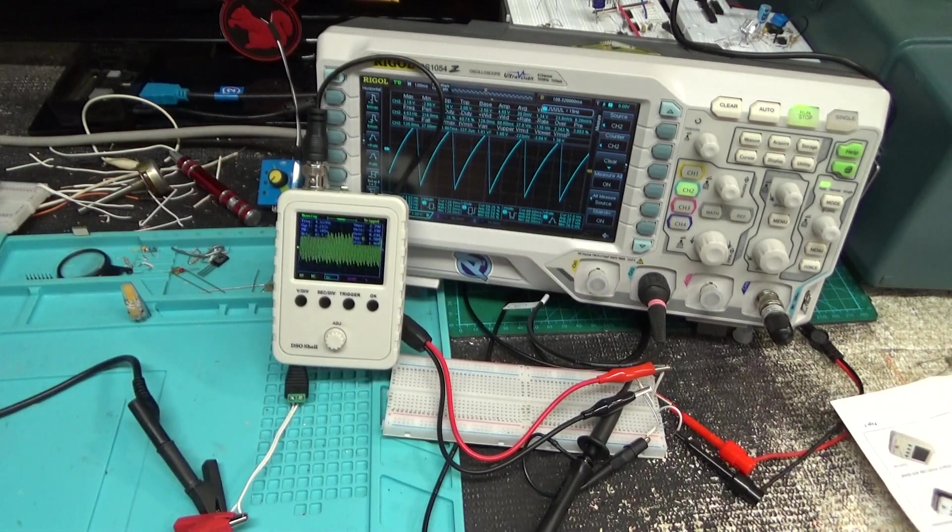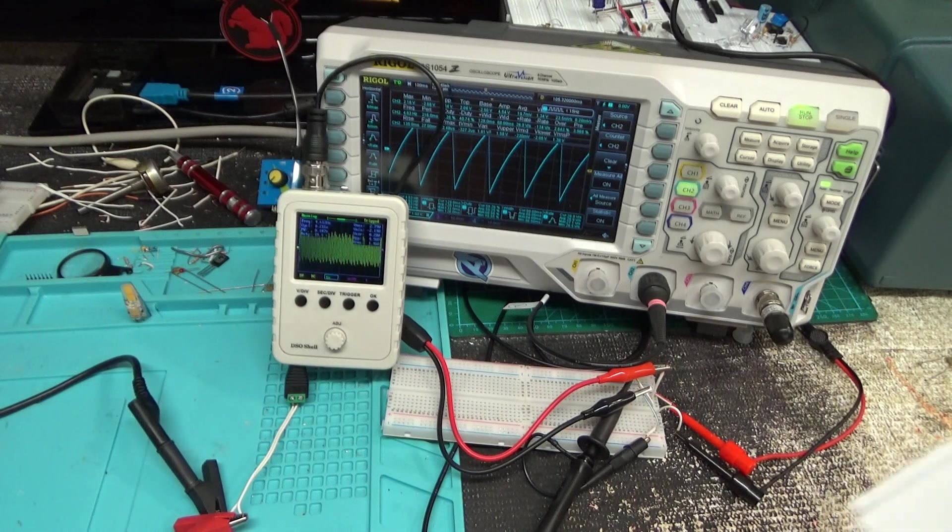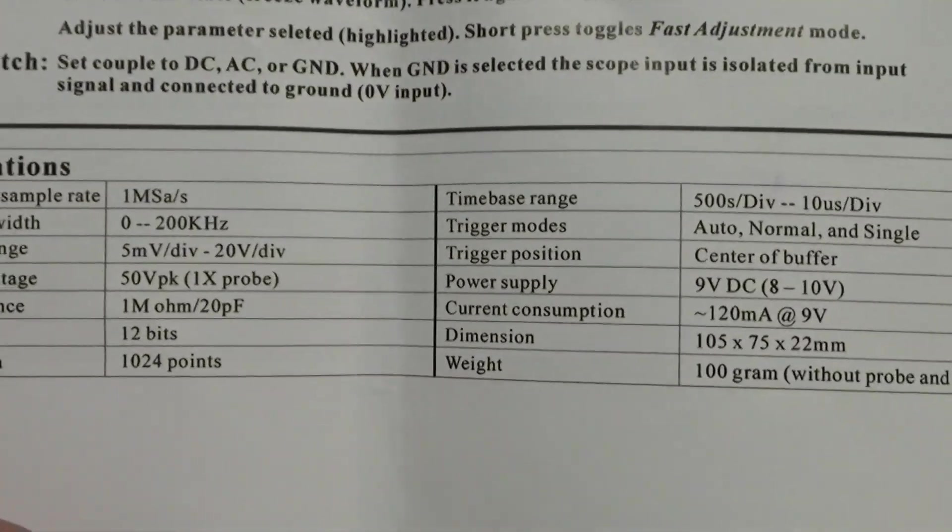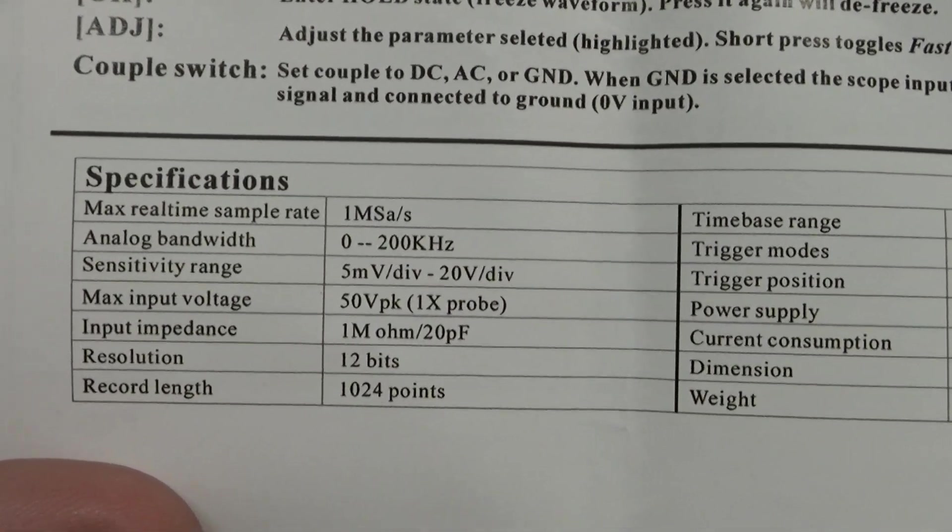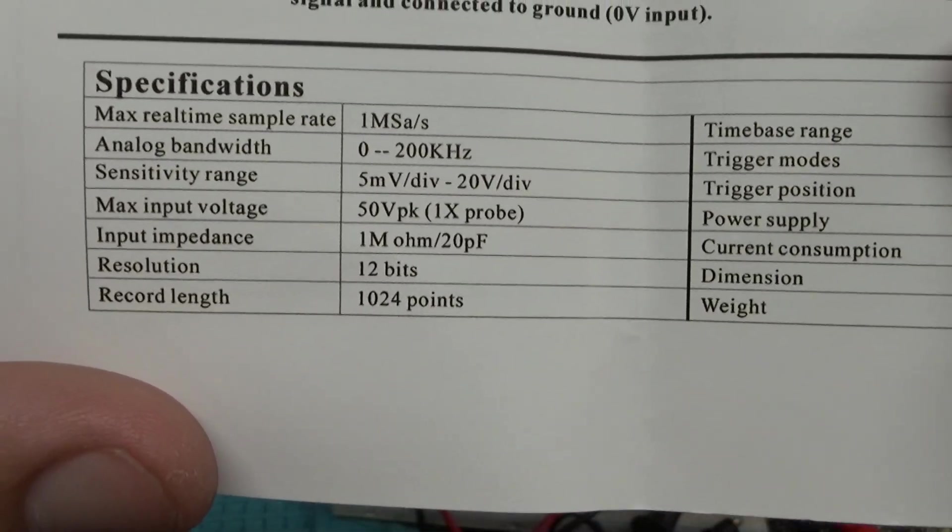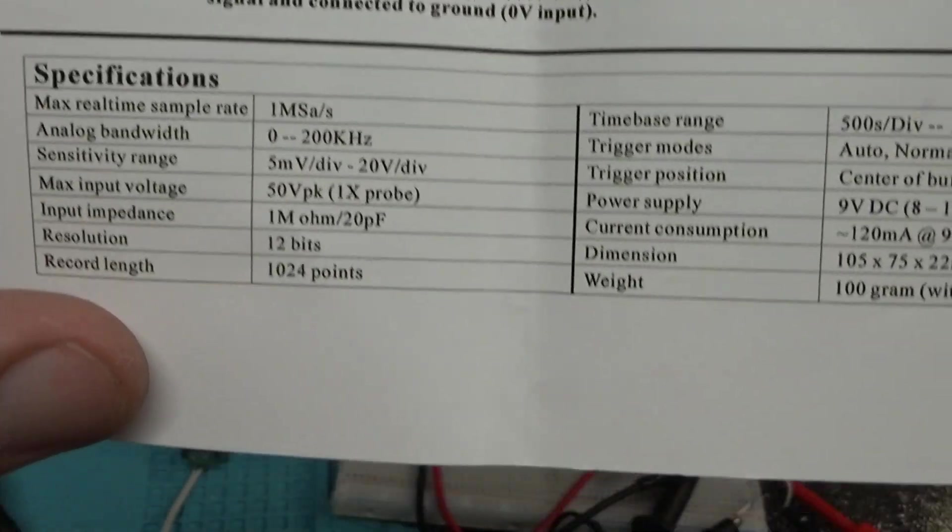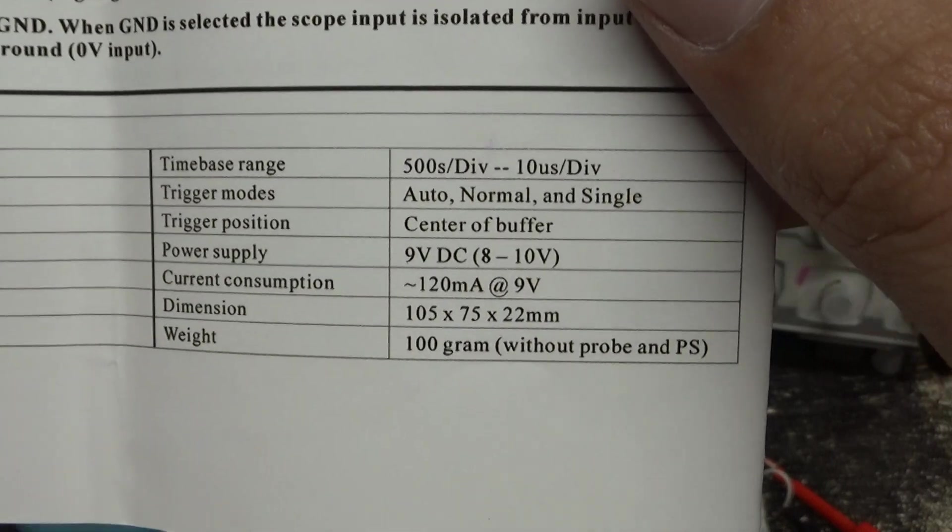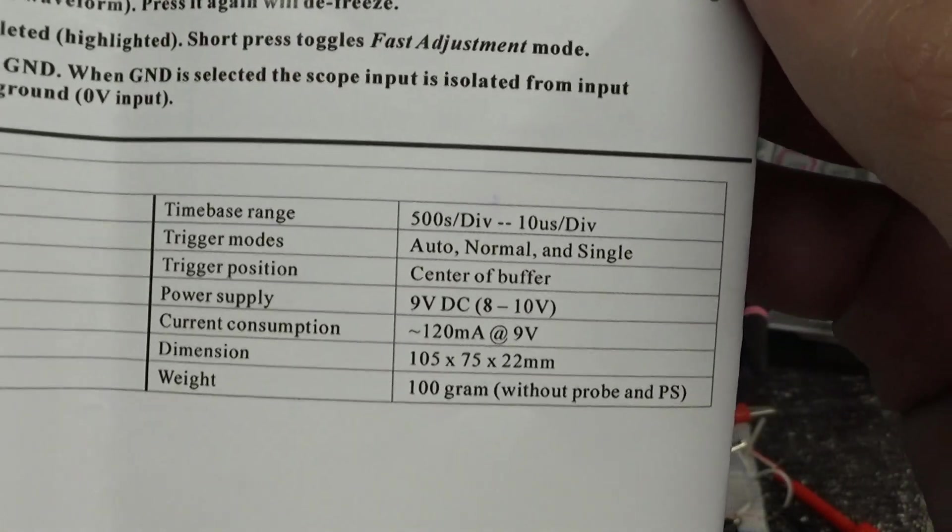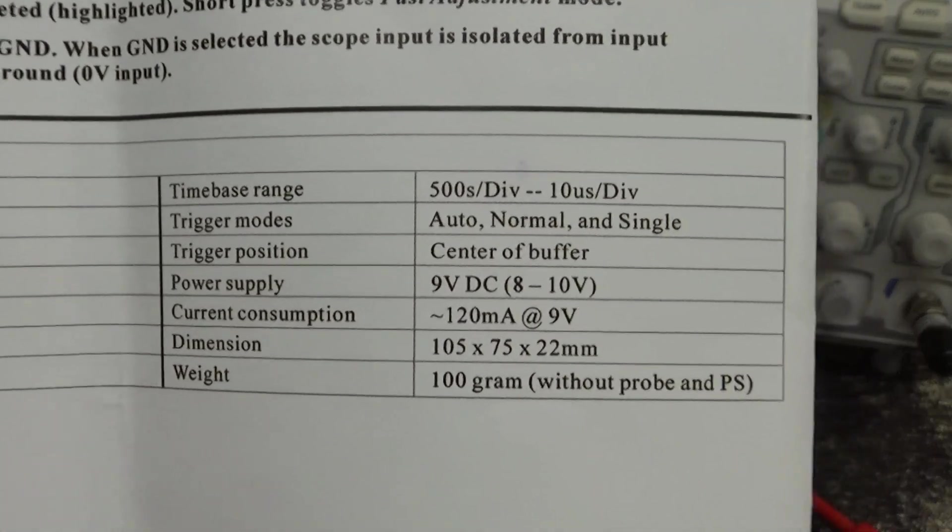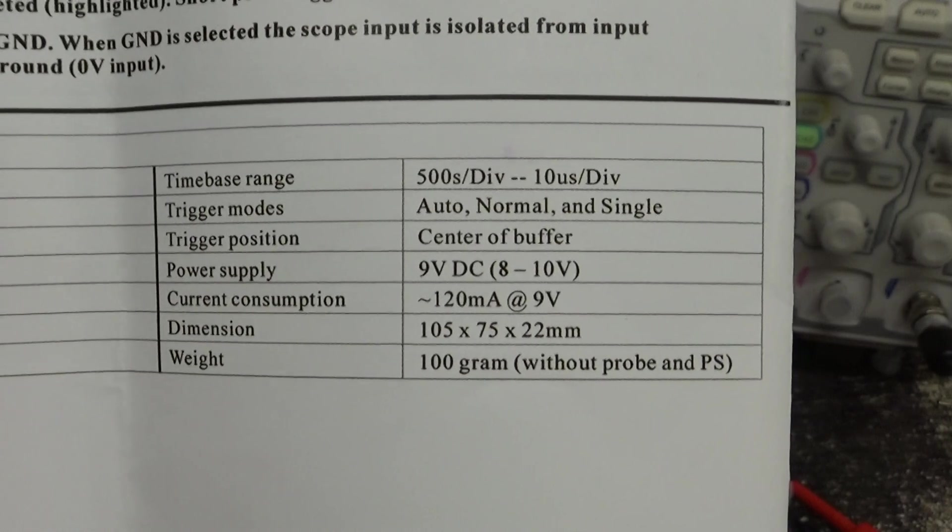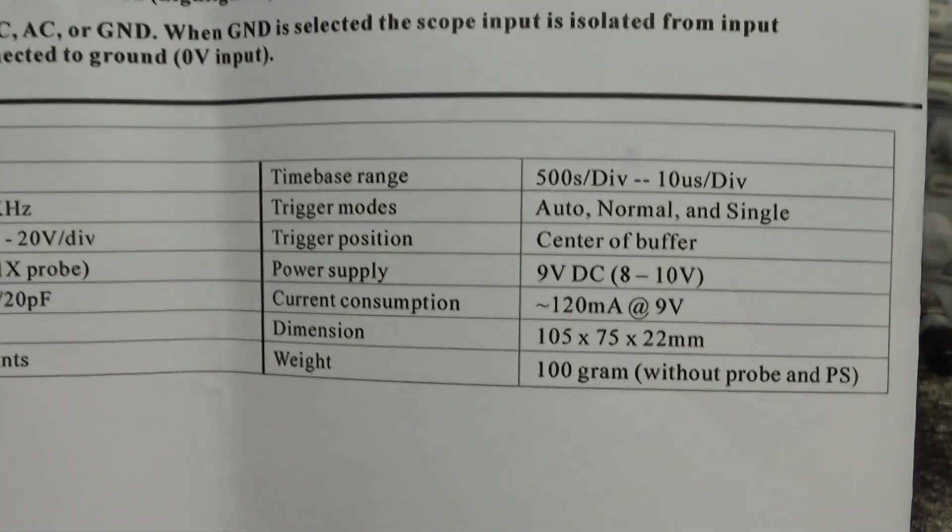They say this thing's good to 200 kilohertz. Let's check out the stats. Yeah, 0 to 200, 5 millivolts, 50 volt peak to peak with a 1x probe. Interesting, I didn't know they had other options. 12 bit resolution, 1,024 points. I think that just pretty much means that the whole thing's in an averaging mode, like regular average mode like you would have on your digital scopes now. Three different trigger modes, center buffer, power supply 8 to 10 volts, 120 milliamps. Mine's running at 105 milliamps right now, 9 volts.